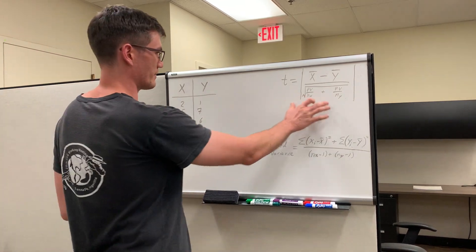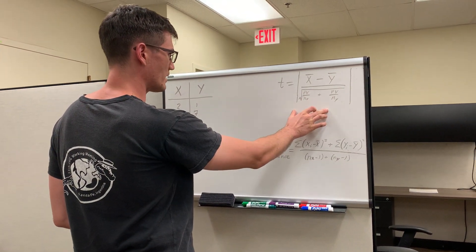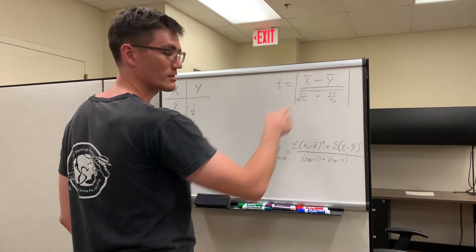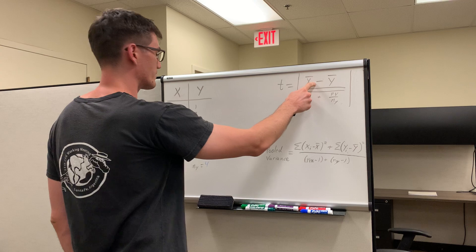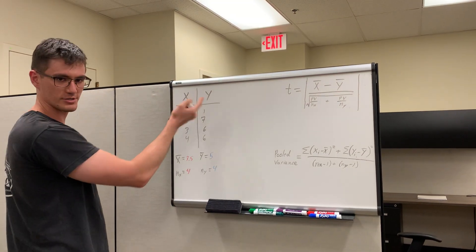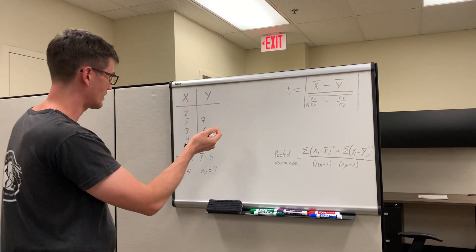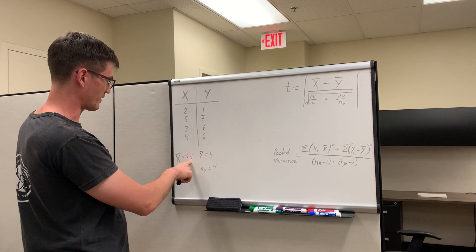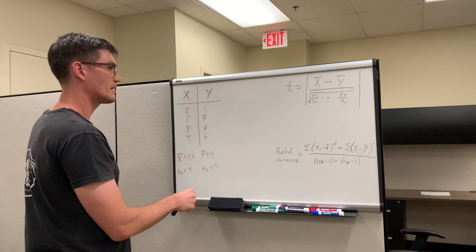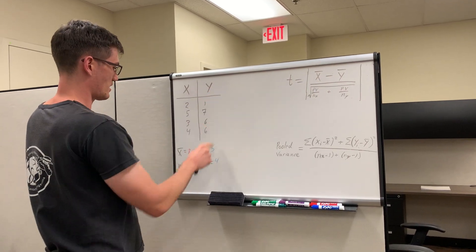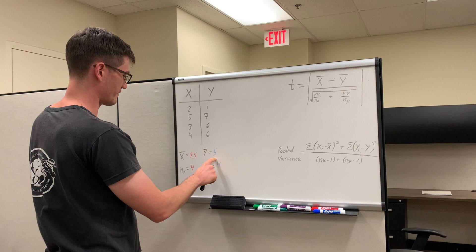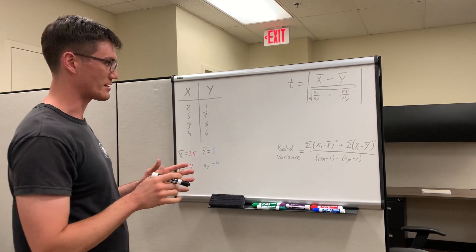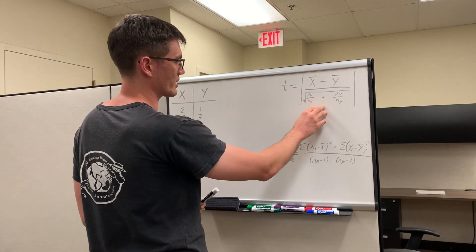So the first thing you've got to do is look at your t-formula. The numerator here includes x-bar minus y-bar. What are those? Well, x-bar is just the mean of treatment x - x-bar is just a shorthand expression for that. And I've already calculated that here. You could probably do this in your head. It's 3.5 for the mean of treatment x. y-bar is the mean of treatment y, and that is 5. And then, so the numerator is pretty straightforward.